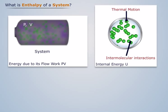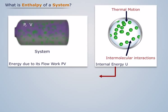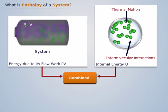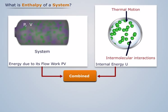Now if we calculate the sum of internal energy of this system and the energy due to its flow work PV, this will give us the enthalpy of this system.